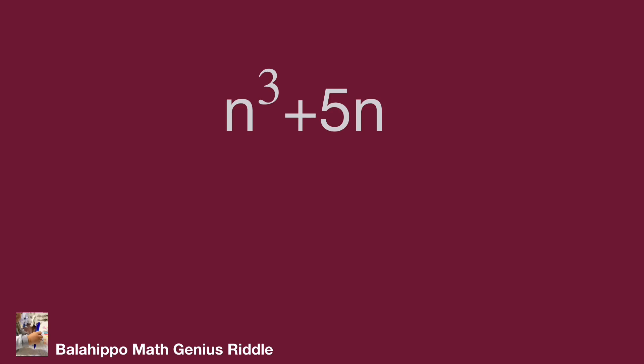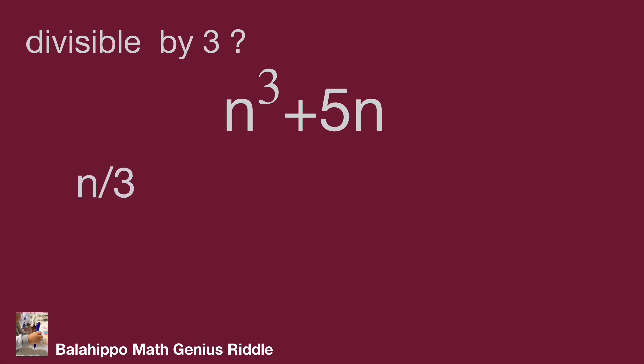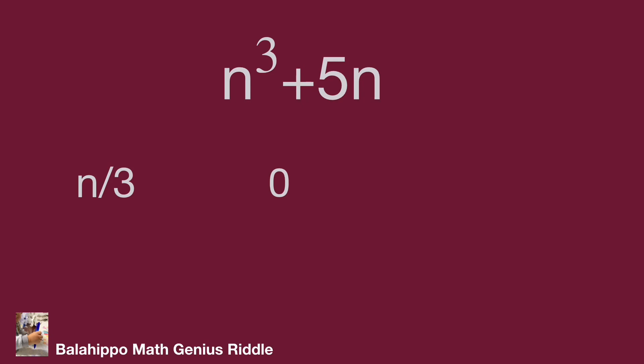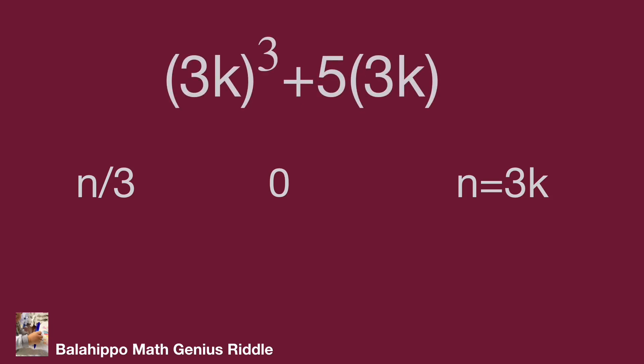Next, to prove n cubed plus 5n is divisible by 3, there are three remainder conditions when n is divided by 3: the remainder is 0, 1, or 2. When n divided by 3 has remainder 0, we define n equal to 3k. Substituting into n cubed plus 5n gives (3k)³ plus 5(3k). Both terms contain the factor 3, so the expression is divisible by 3.